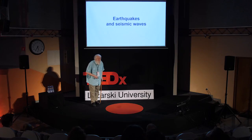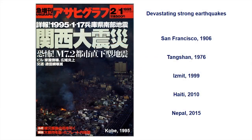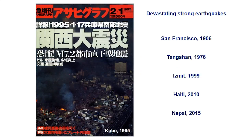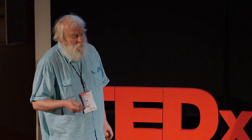Let's start from earthquakes and seismic waves. Nearly each month, we hear about strong earthquakes. This is a cover of a Japanese journal which shows the destruction of the town Kobe in 1995. Other strong earthquakes were in San Francisco 1906, Tangshan in China 1976, Izmit, Turkey, Haiti, Nepal three years ago. As we see, these earthquakes occur all over the world. But the question is: are they distributed regularly or randomly?